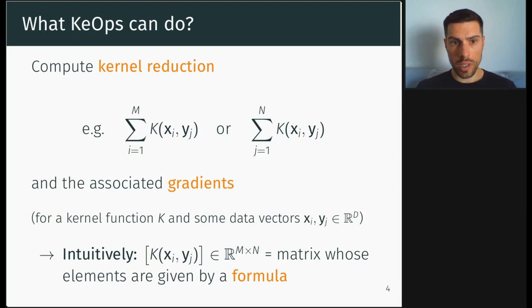More generally, KeOps can compute kernel reduction and the associated gradients. I will explain later what is a kernel function, but intuitively imagine that you have a matrix whose elements are given by a formula and you want to do some row-wise or column-wise sum.